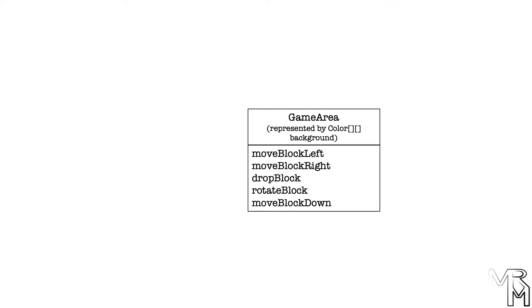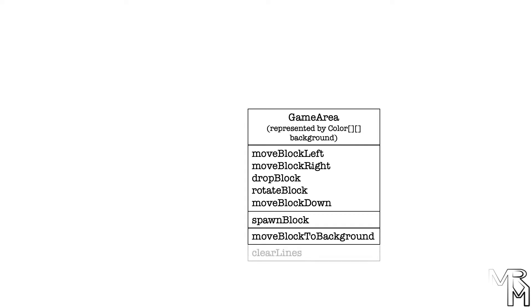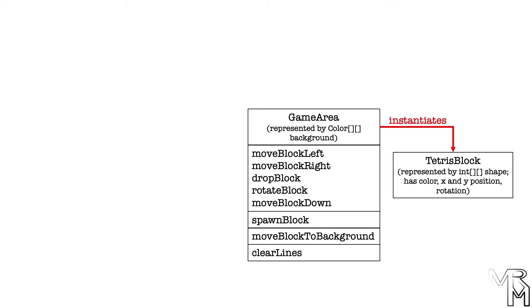We have a GameArea class that is represented, among other things, by an array of color arrays named Background. The GameArea class contains five methods responsible for moving a Tetris block. The GameArea class is also responsible for spawning blocks, moving them to background when they stop falling, and clearing complete lines. The GameArea class is also responsible for instantiating Tetris block classes at runtime.